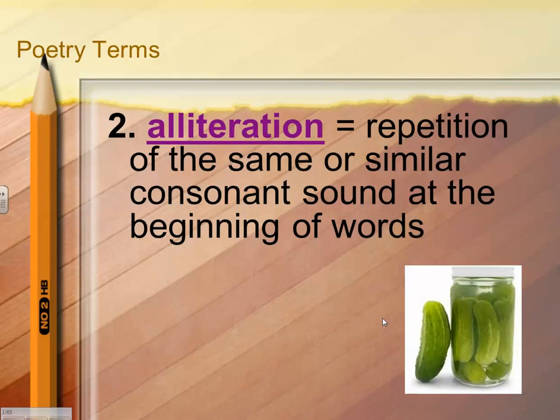Alliteration is the repetition of the same or similar consonant sounds at the beginning of words. It's important that it's at the beginning, or it'll be something else, which we'll learn here in a moment. A consonant is anything that's not a vowel — A, E, I, O, U, sometimes Y, are all vowels.